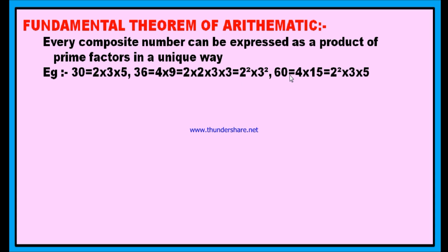Similarly, 60. 60 is nothing but 4 times of 15. 4 is 2 square, and 15 is 3 into 5. Therefore, 60 can be written as 2 square into 3 into 5. This is the only one way in which 60 can be written as the product of prime numbers. This is called the fundamental theorem of arithmetic. Every composite number can be expressed as the product of prime factors in a unique way.